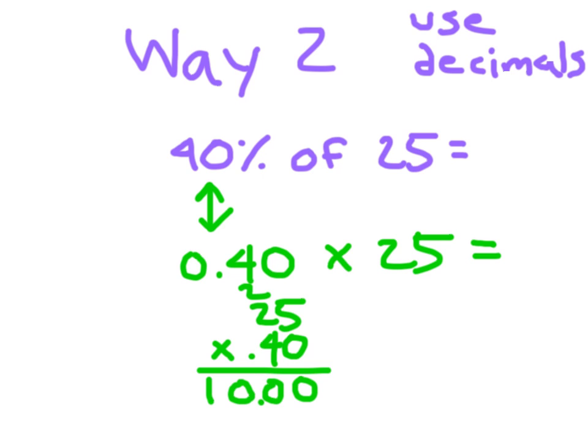2 decimal places there. 2 decimal places in my number. 40% of 25 is 10.00, which I can rewrite as that whole number, 10.